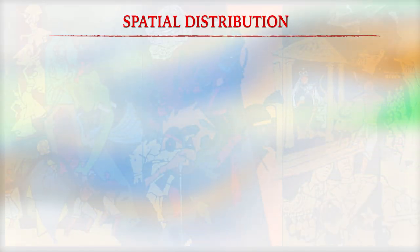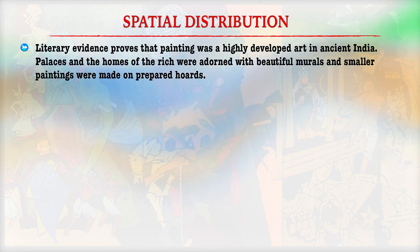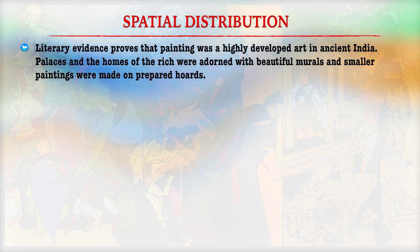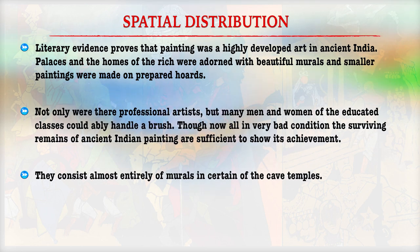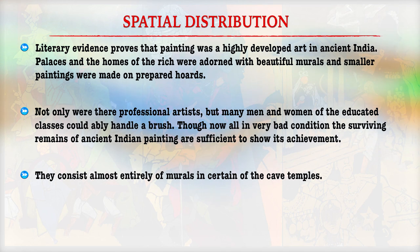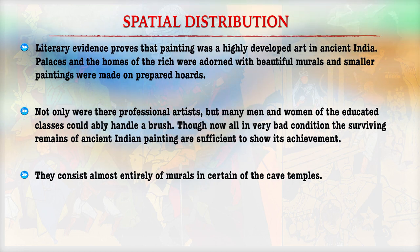Now let us discuss the overall geographical distribution of Indian paintings. Literary evidence provides that painting was a highly developed art in ancient India. Palaces and the homes of the rich were adorned with beautiful murals, and small paintings were made on prepared boards. We had professional artists, both men and women of educated classes, who handled painting activities. The surviving remains of ancient Indian paintings are sufficient to show the achievements of painting, especially in reference to murals in certain cave temples.